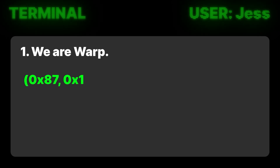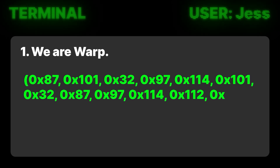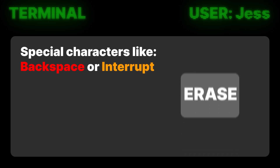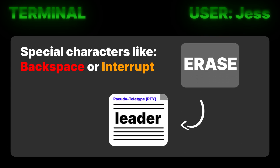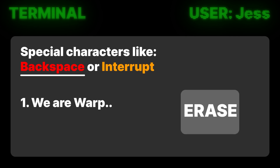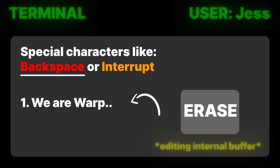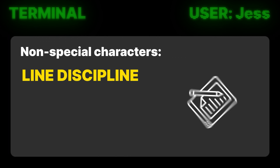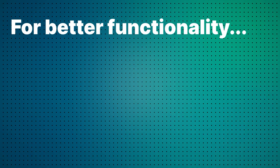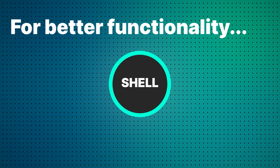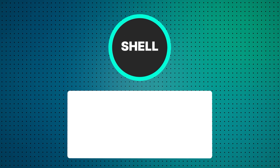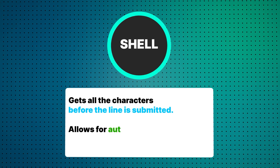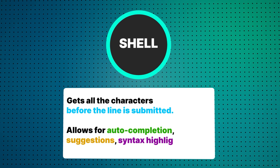When you enter a keystroke, the character you insert is translated into Unicode characters. These characters are written to the shell's line editor. Special characters like backspace or interrupt will trigger special functions that will decide if it needs to write back to the leader. So when you hit backspace, the eraser character is triggered to edit its buffer by removing the last character and then writing the intent back to its leader. For non-special characters, the line discipline will write the character back to the leader. Modern shells disable the line discipline's canonical features by putting it into raw mode so that the shell's line editor gets all the characters before the command is submitted, and can help the user write their command with things like completions, auto-suggestions, and even syntax highlighting.